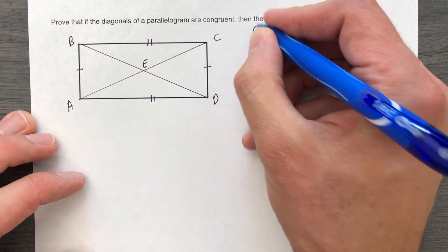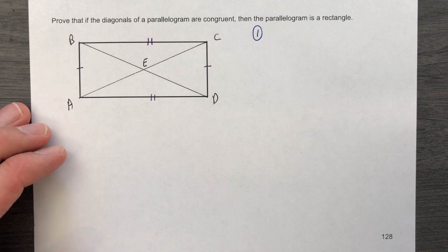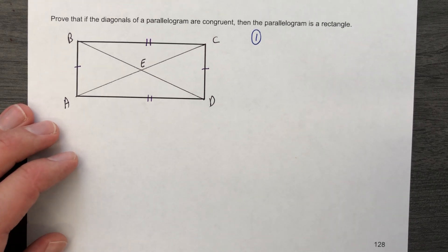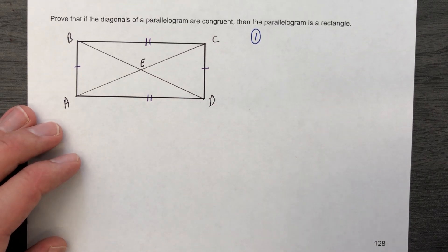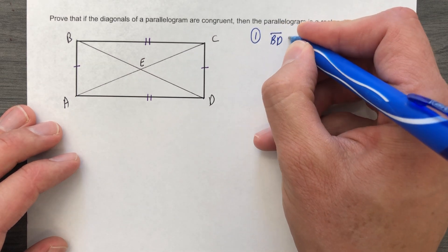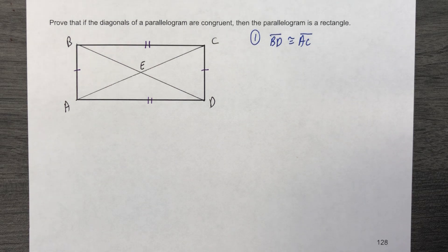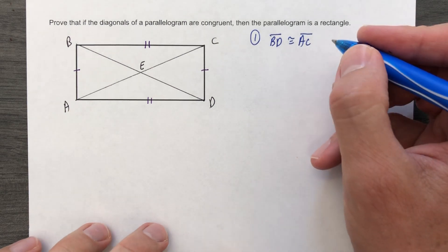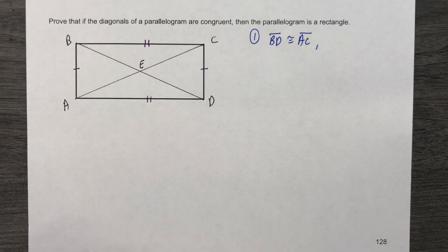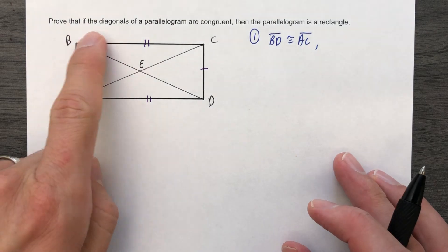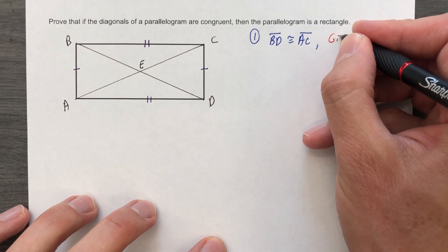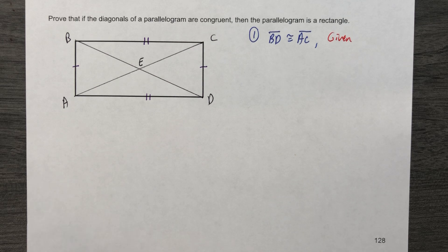Number one, what do we know? Well, if I'm gonna go all SSS on you here, then I got to start listing sides that are congruent. I know that BD is congruent to AC, and I know that based on—they didn't directly state this is given, but I know it because that was given. They told us that the diagonals are congruent.